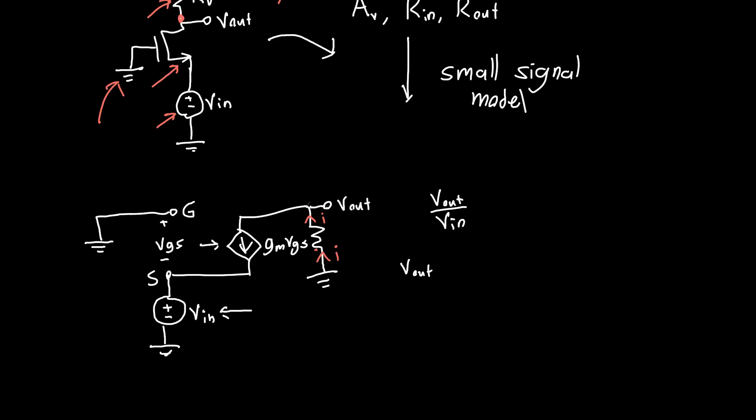What is the output voltage here? We know we've got a certain current I flowing through this resistor. The output voltage, irrespective of what the input voltage is, is just minus I times RD. We know what that current is. That current I is just gm*VGS. So we can rewrite Vout as minus gm*VGS times RD. All we have to do is figure out what VGS is.